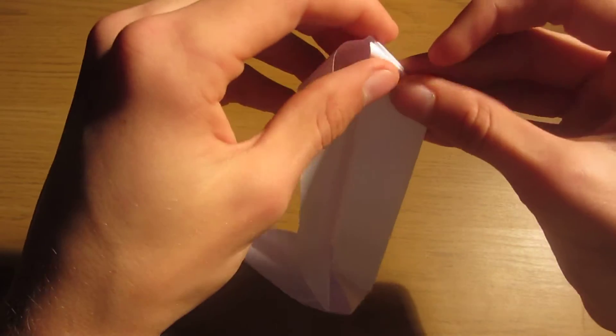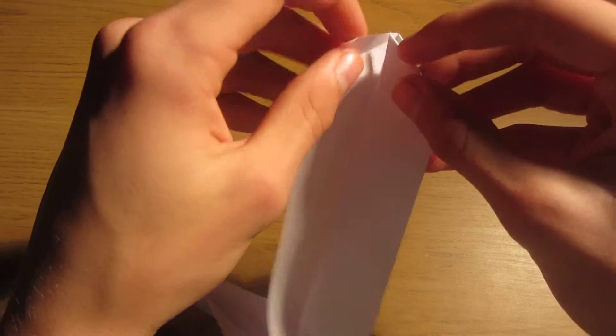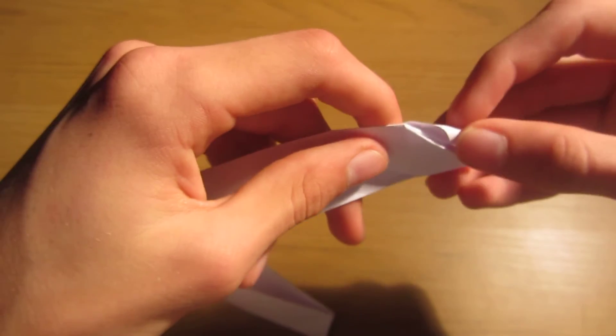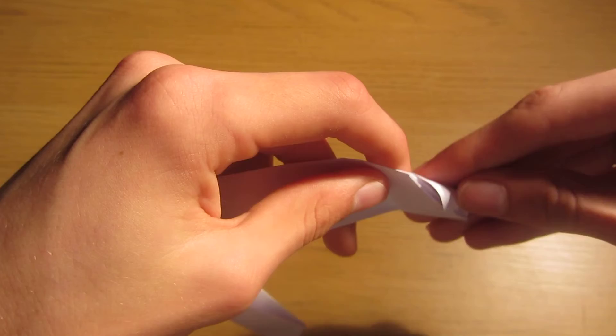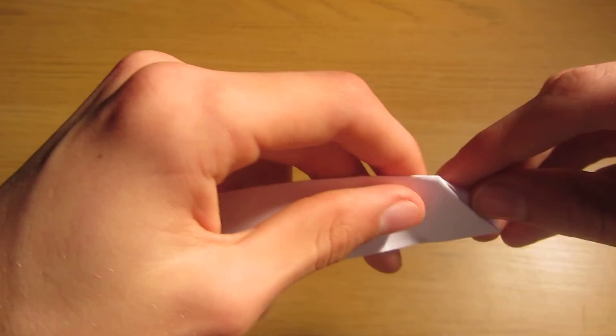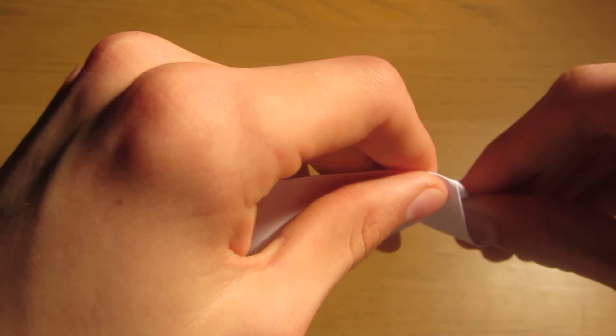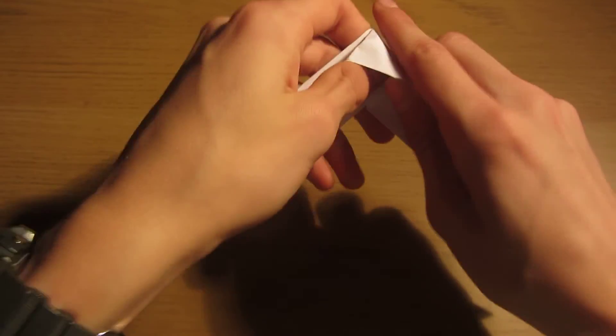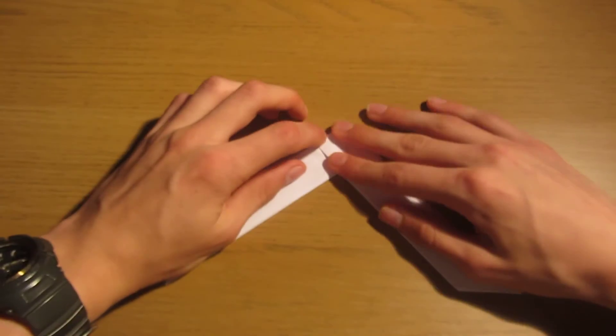And then we're going to fold this triangle into this flap here and close it. And then we're going to tuck this triangle into this flap here. Like earlier. So just close the model. And then just put it into there. Like that. Make sure it will collapse as well.